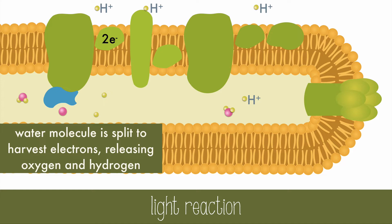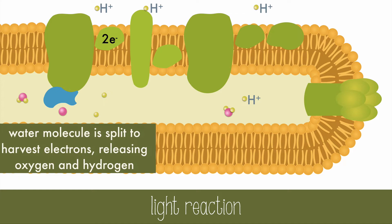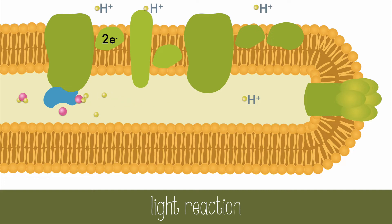Photolysis occurs rapidly and constantly in the presence of light, so another water molecule will be split, and the two oxygen atoms will form molecular oxygen, which can then diffuse out of the plant. It's a byproduct or waste product of photosynthesis, since it's not used here.